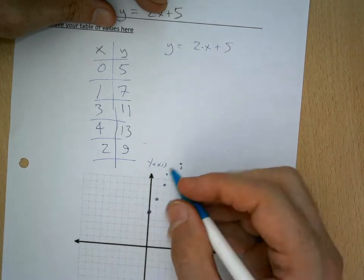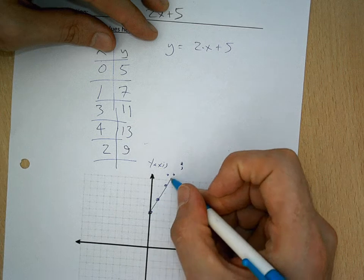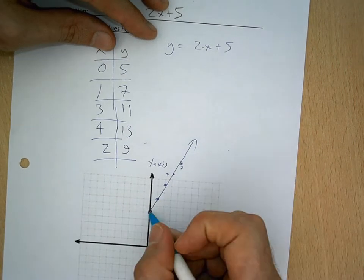So actually, this is our graph here. Should be a nice straight line. Sorry, that's a mislabel.